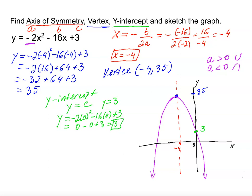So, this is how you would find axis of symmetry, vertex, and y-intercept. And I hope this was helpful. Please let me know if you have any questions. Thank you.